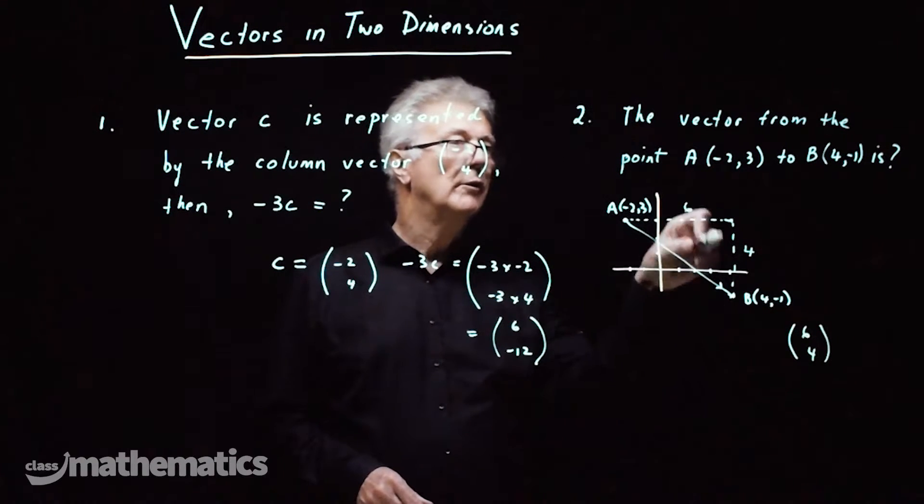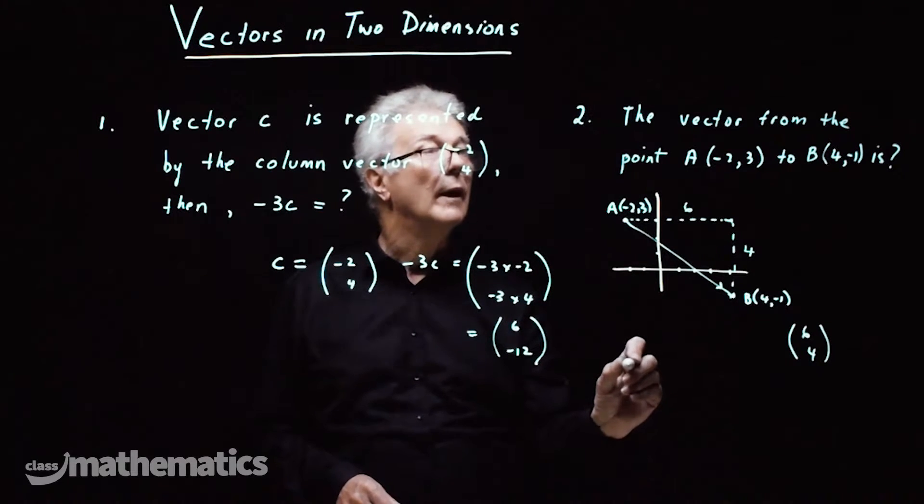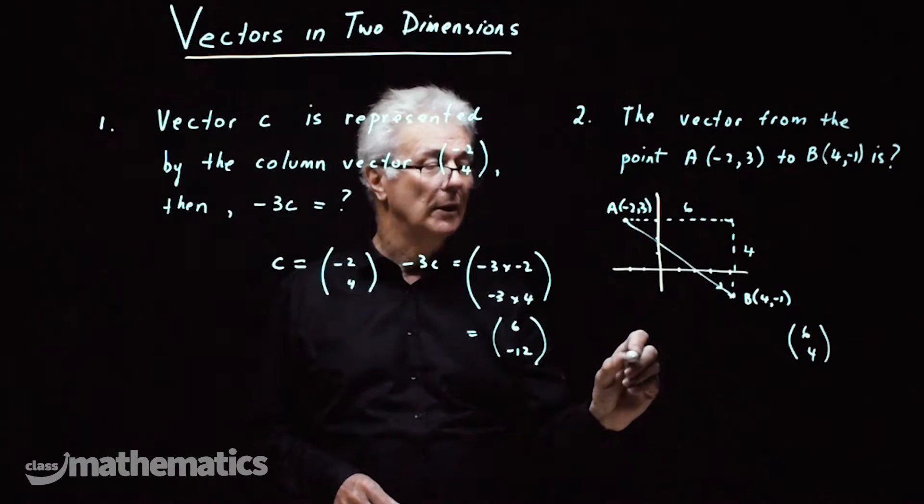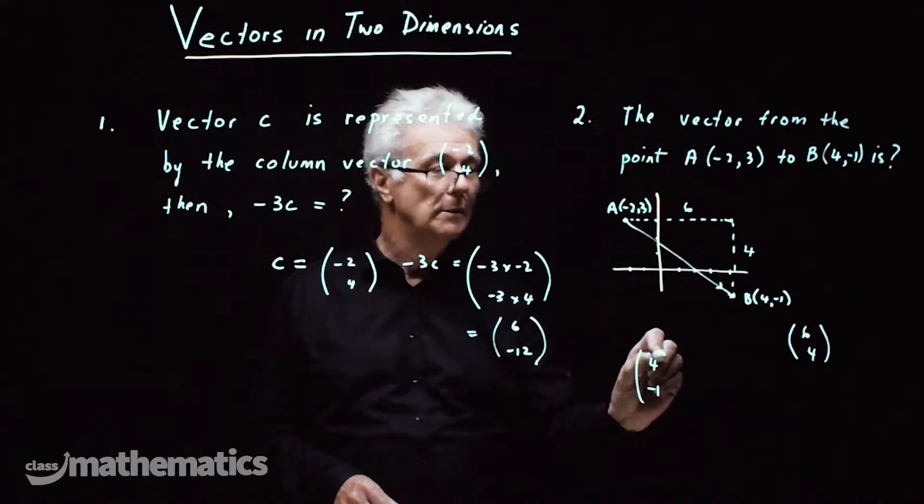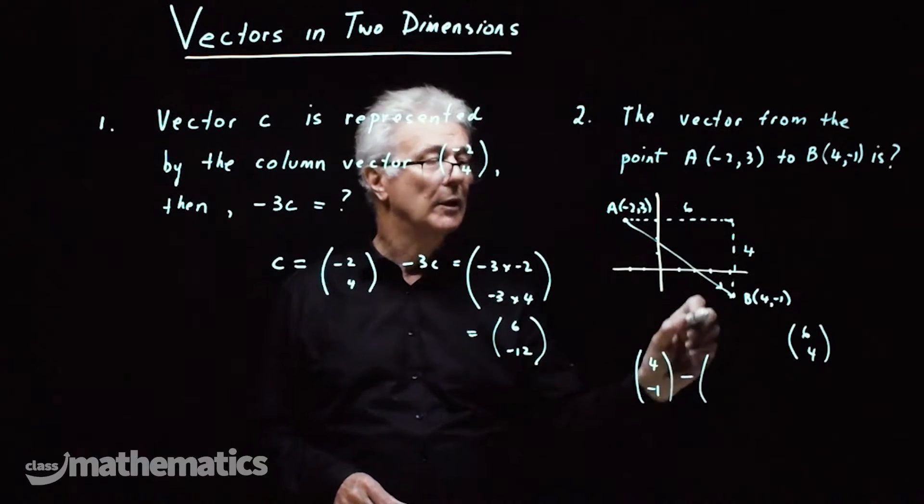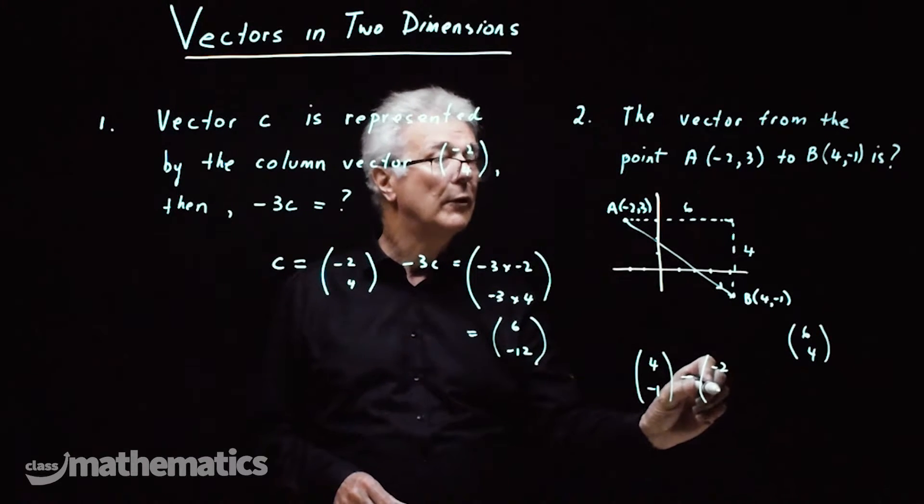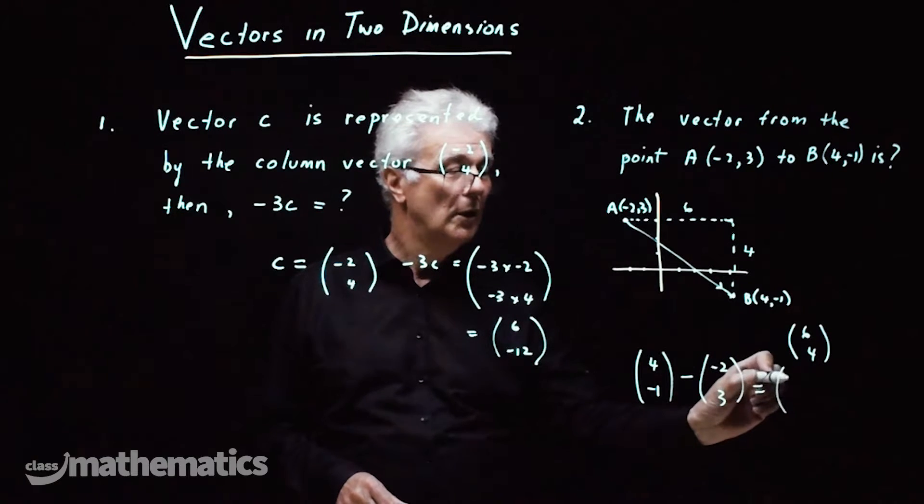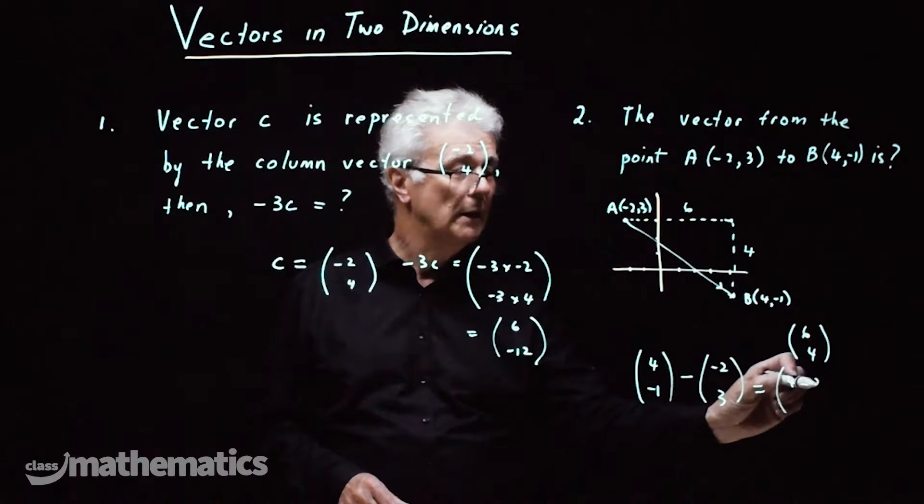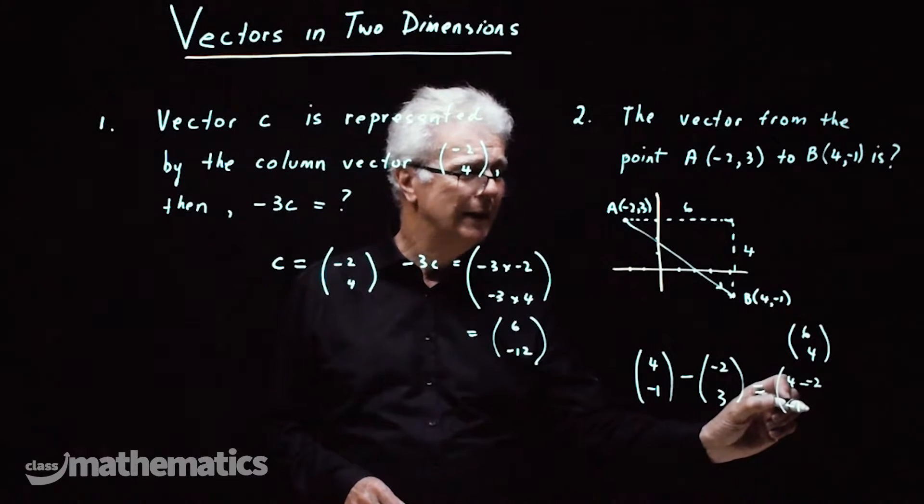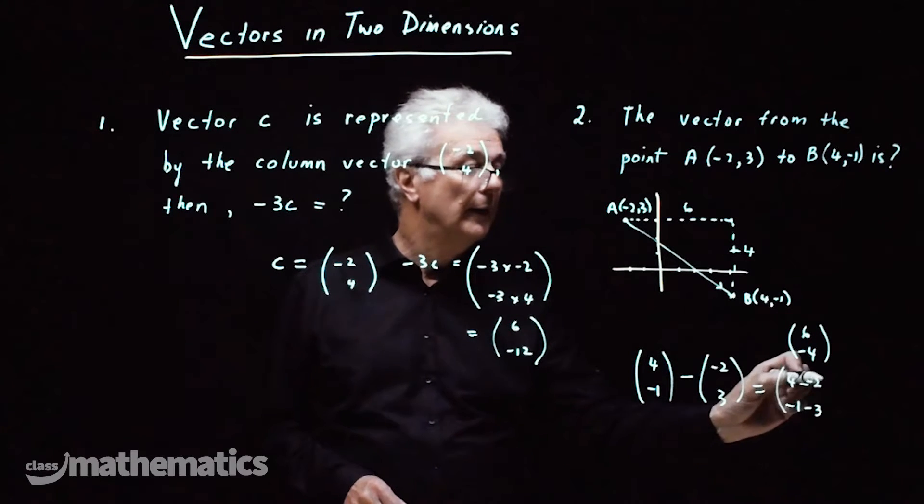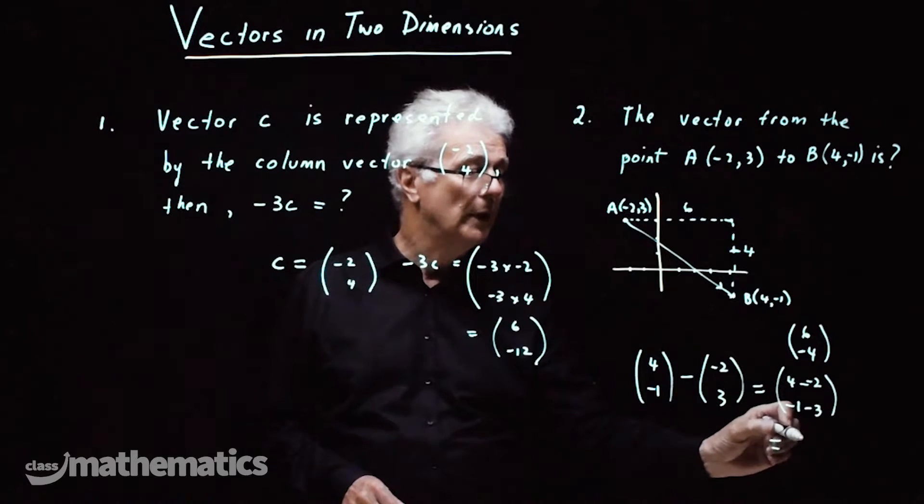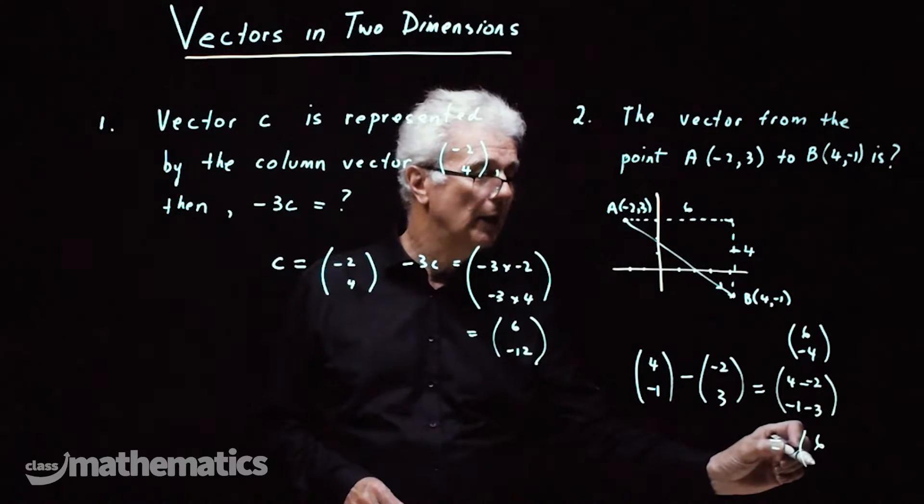Now to do it without the diagram we can say that it'll be 4, negative 1 minus minus 2, 3 and that becomes 4 minus negative 2 and minus 1 minus 3, that should have been minus 4 sorry going down. So that becomes 6 and negative 4.